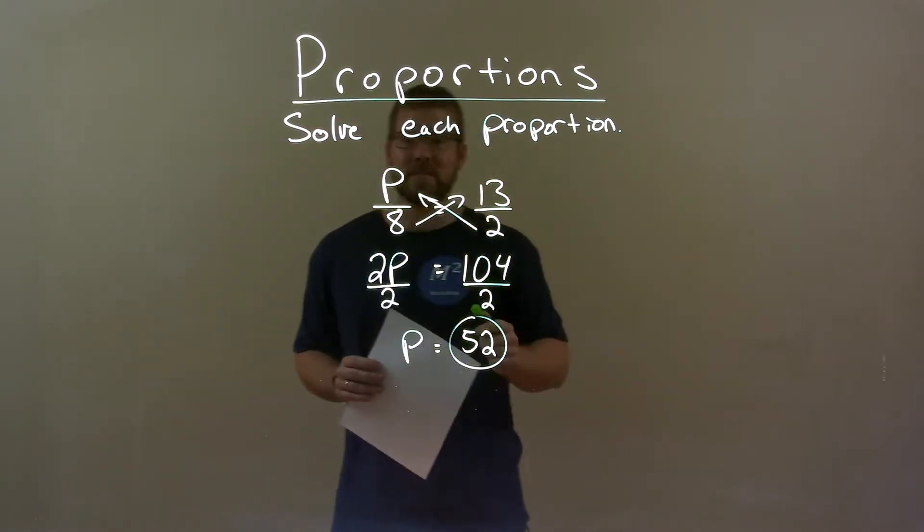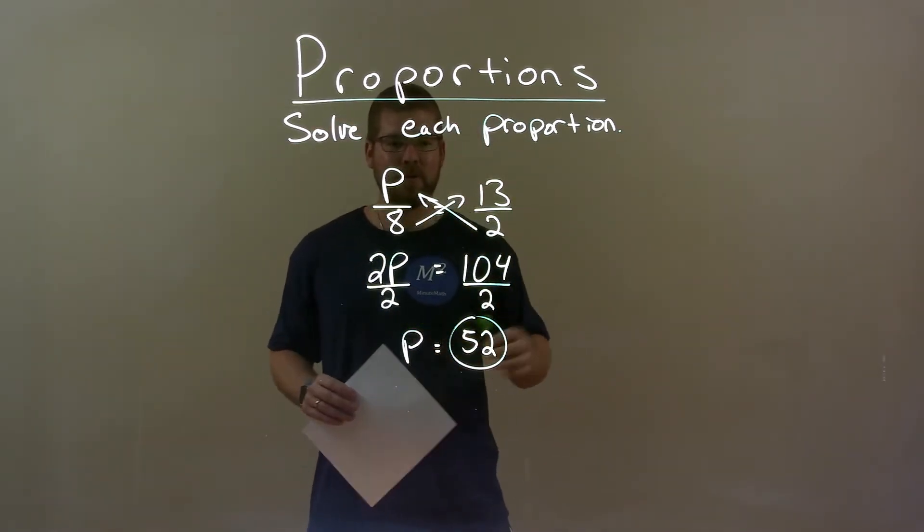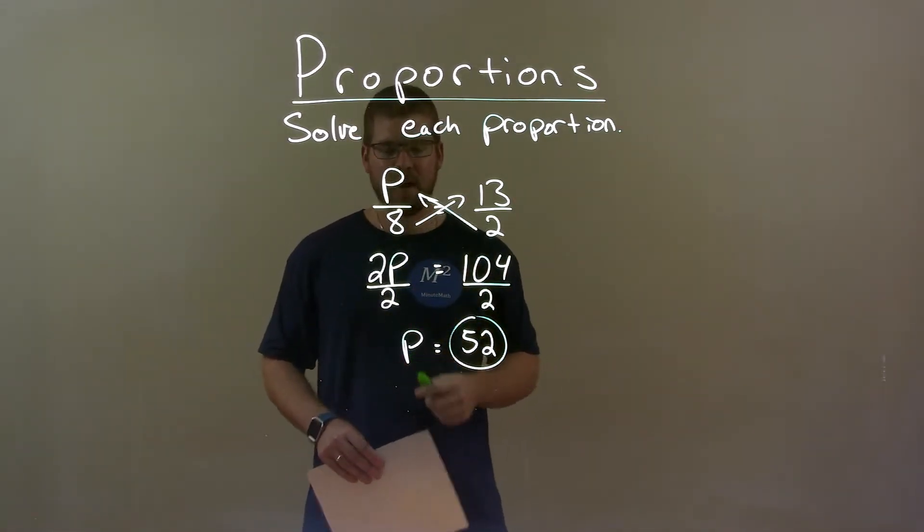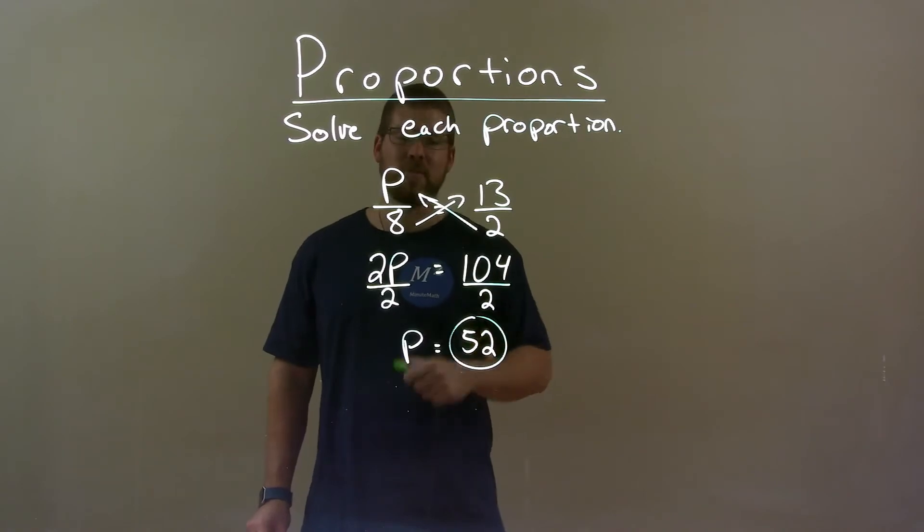So if P over 8 equals 13 over 2 and we have to solve this proportion: Cross-multiply, 2P equals 104, divide both sides by 2, got P by itself to be our final answer of just 52.